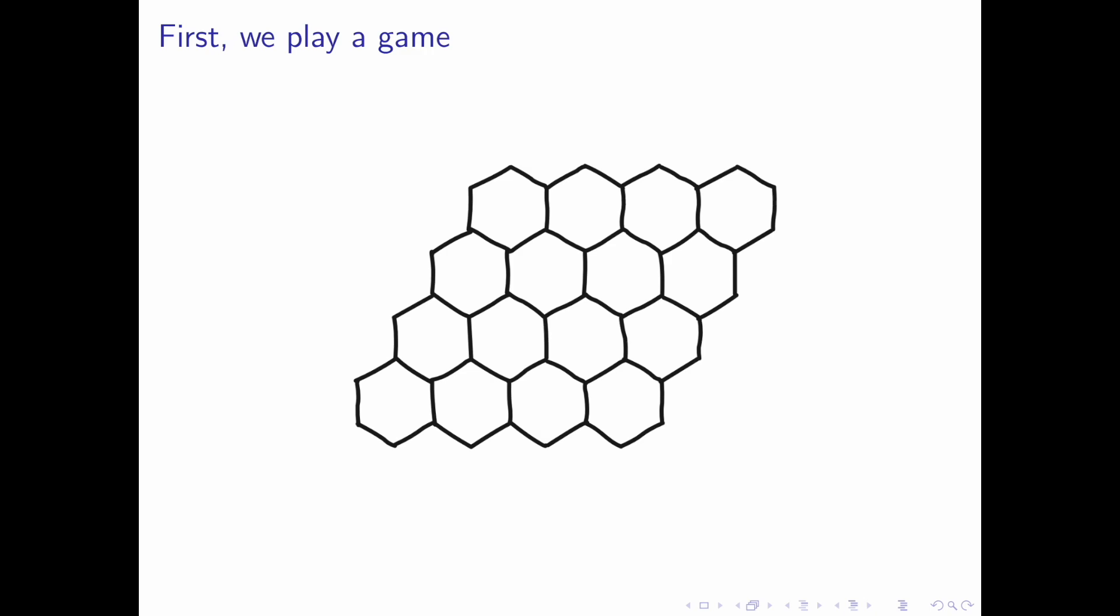An example game goes as follows. Assume Alice is assigned the top and the bottom of the board and Bob the right and the left sides of the board. They take turns placing tiles. Assume Alice goes first.